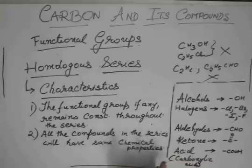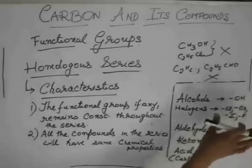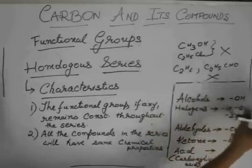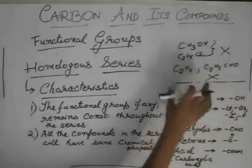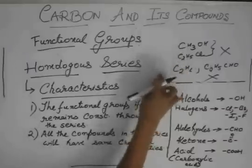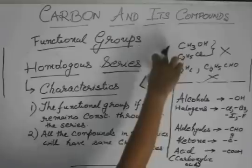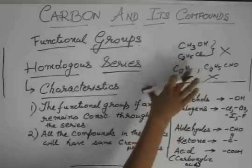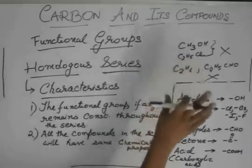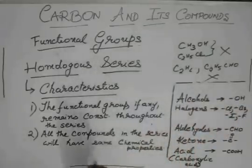They will have the same chemical properties. Because an OH group, no matter how long the chain is, whether it is CH3OH or C2H5OH or C387OH, the chemical properties of all these compounds will be same. That means they will undergo the same set of reactions. They will behave similarly towards different substances.